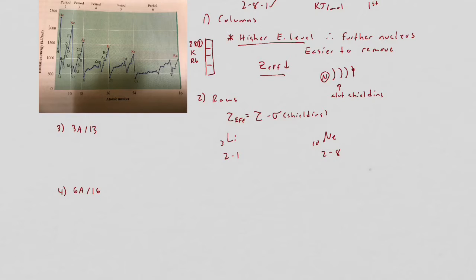The general trend is that as you go down a column, ionization energy, first ionization energy, is going to increase as a general pattern. For rows, counter-intuitively, as you go across a row, the ionization energy actually increases dramatically.